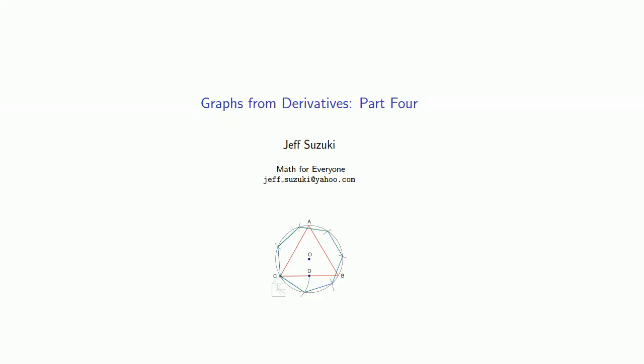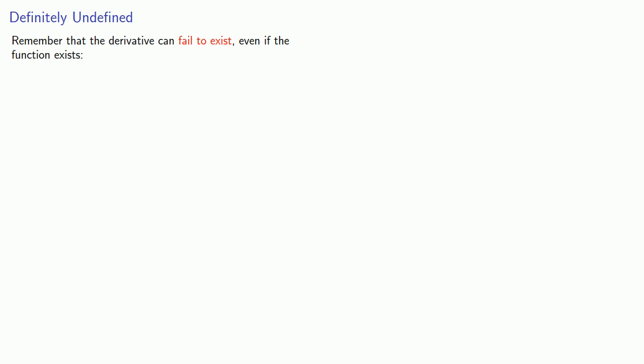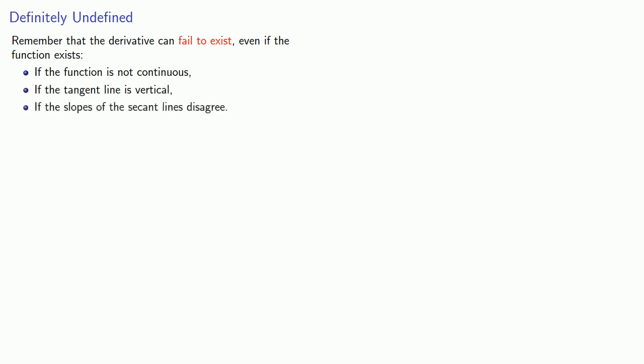Let's put this together and see if we can form a graph from the derivative and other information. One thing we might want to incorporate is where the derivative fails to exist. Remember that the derivative can fail to exist even if the function exists: if the function is not continuous, if the tangent line is vertical, or if the slopes of the secant lines disagree.